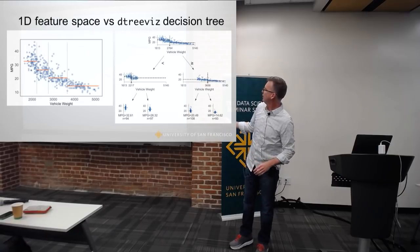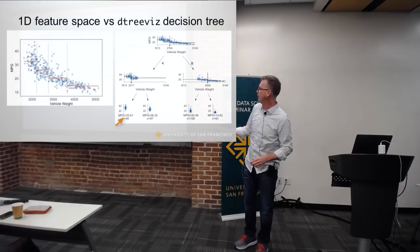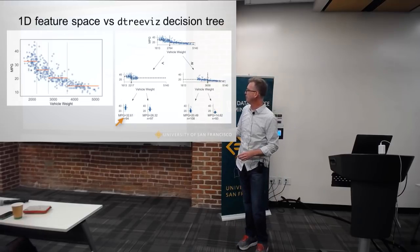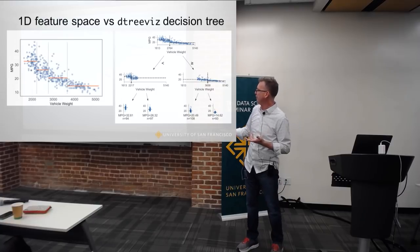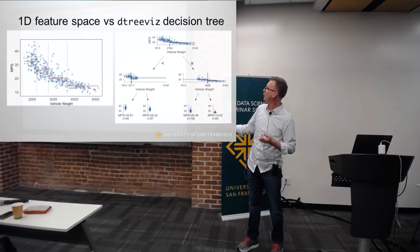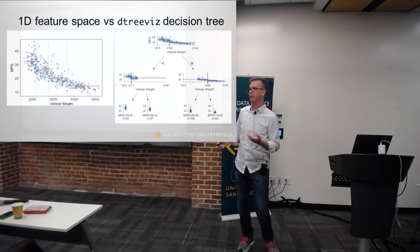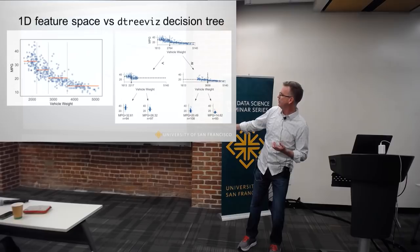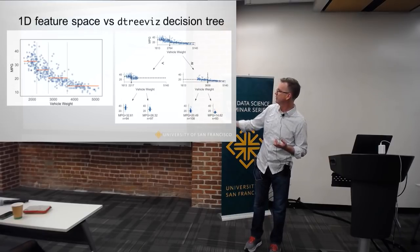When we get down to the leaves, we have a strip plot that shows you something about the number of elements visually, the density of them, and where they are in this space. Notice that this scale is the same for all of the target spaces — again, it's for comparison purposes. You can see immediately that the predicted value, the mean, is going downwards as we descend in this partition space.